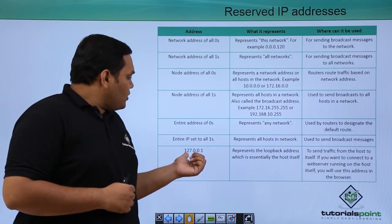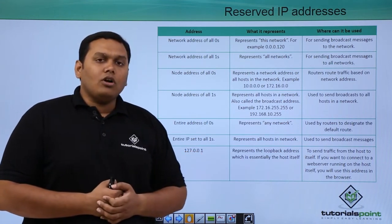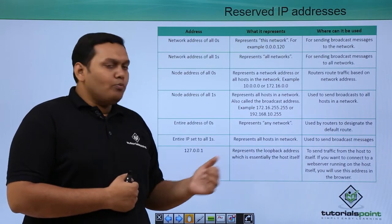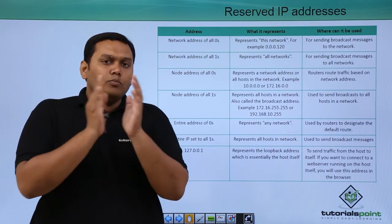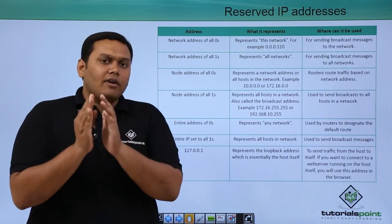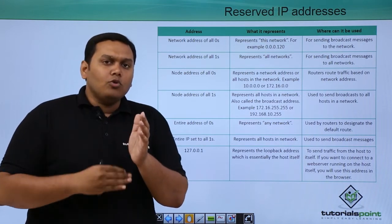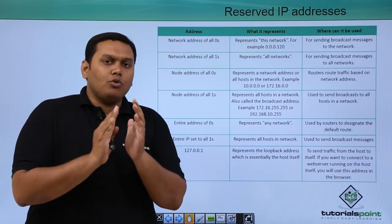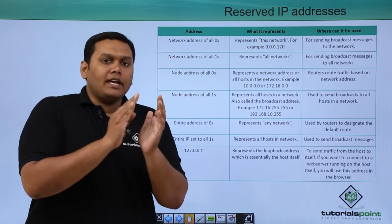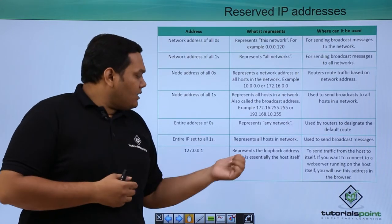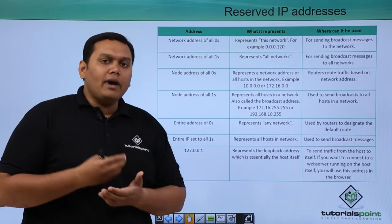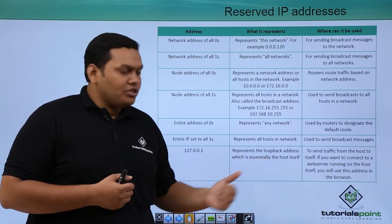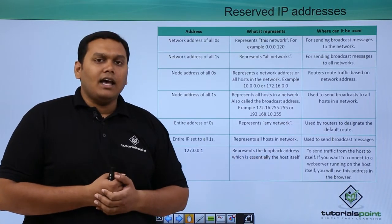Coming to the last one, 127.0.0.1 — this represents the loopback address. Loopback addresses are assigned to devices so that loops do not occur in the network. We will be discussing loops in the next videos to understand what exactly loopback addresses are and their importance.